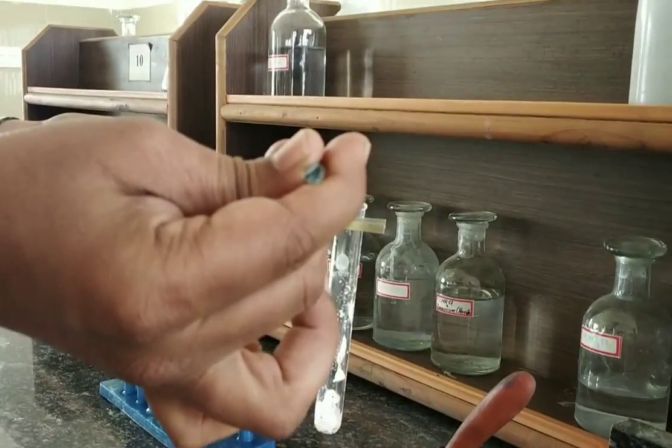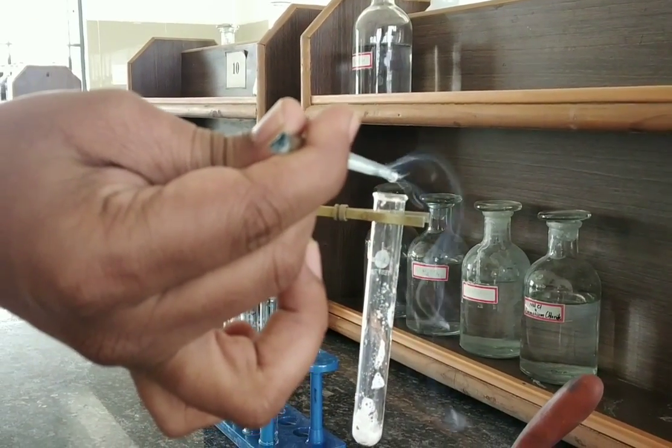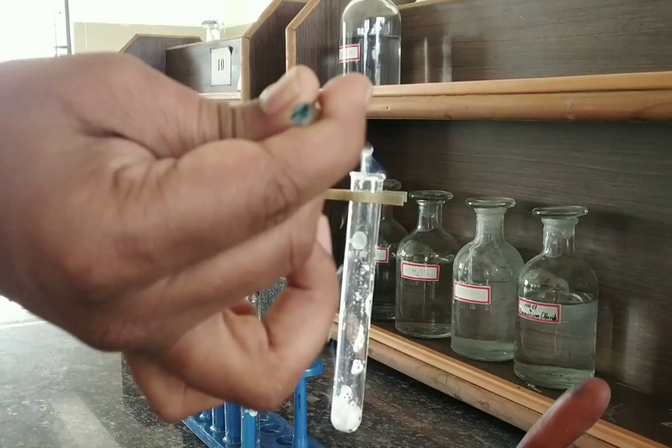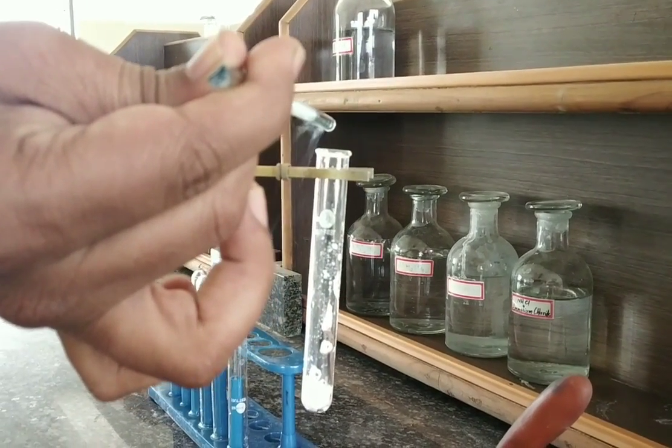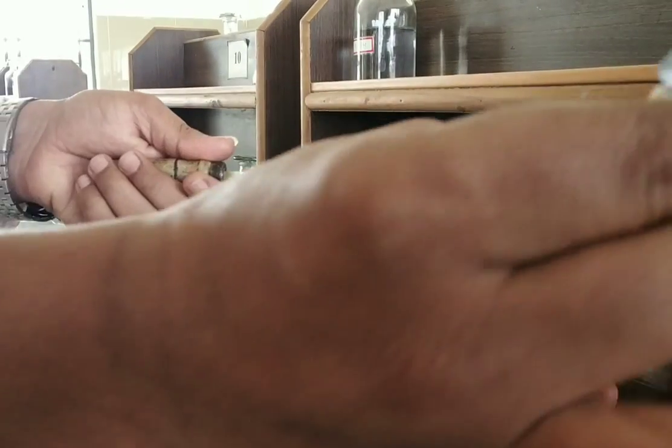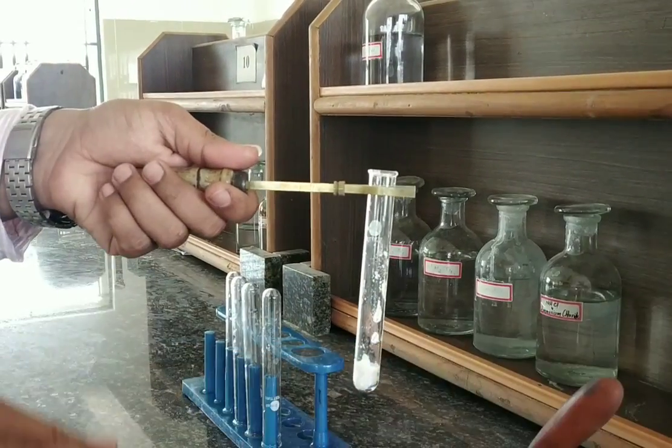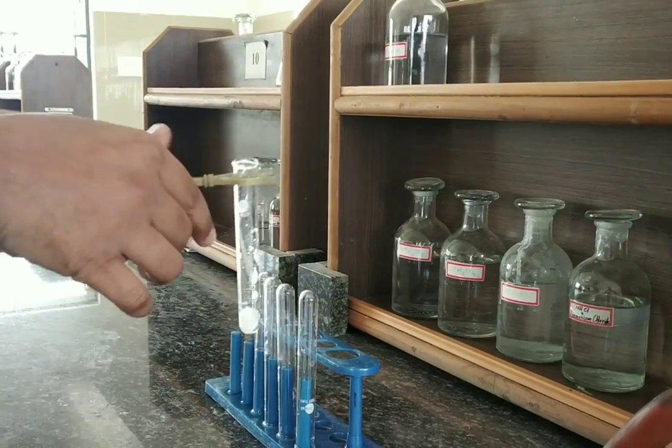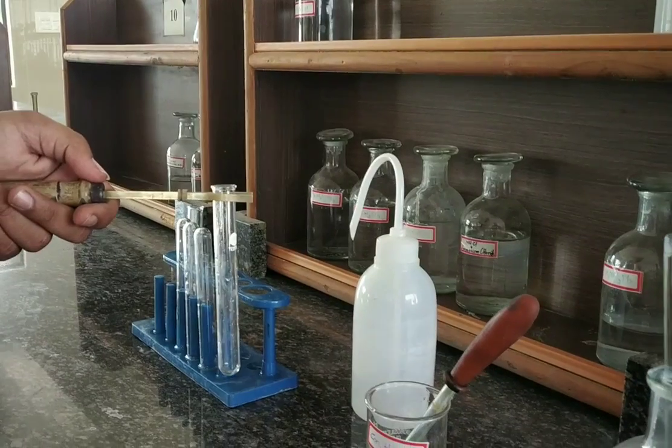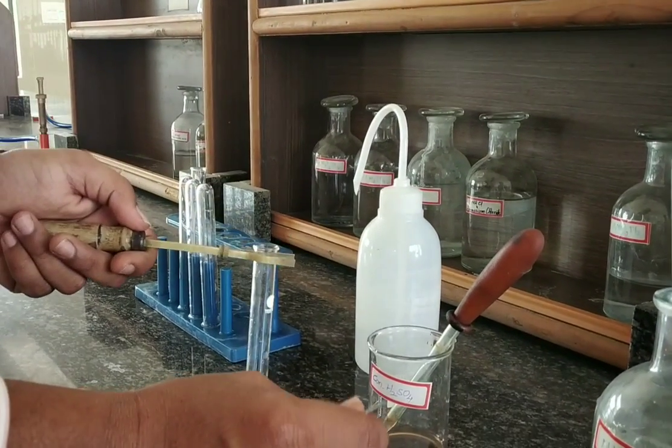After checking with the glass rod dipped in NH4OH ammonium hydroxide solution, these white fumes are NH4Cl gas, ammonium chloride gas. This is the present test for Cl minus. We can now go for a confirmative test.